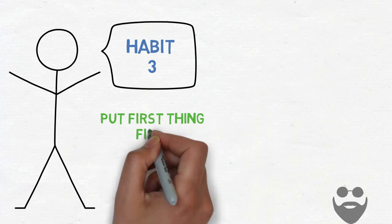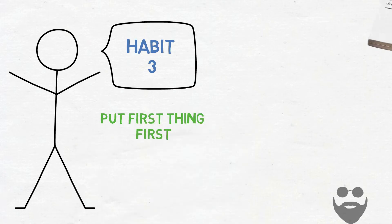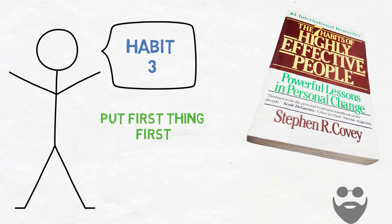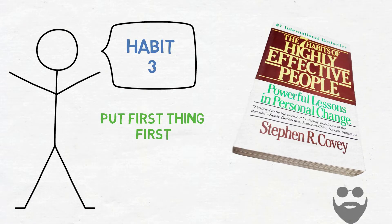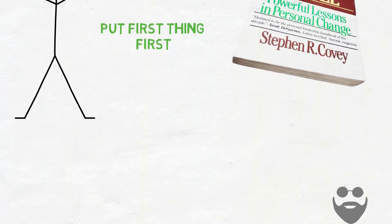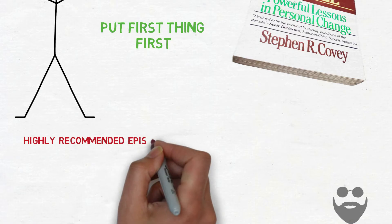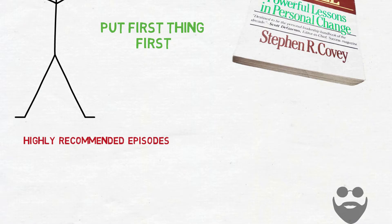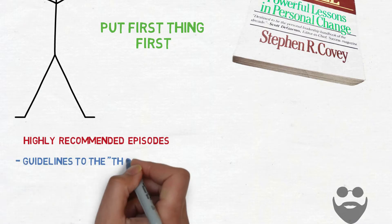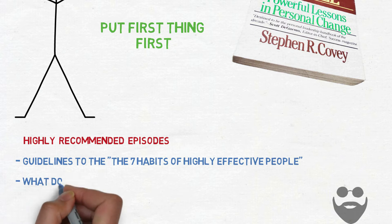This episode is part of the seven habits series based on what I've learned from Stephen Covey's bestselling book, The Seven Habits of Highly Effective People. I highly recommend for you to watch the following three episodes of our seven habits series in order to fully understand and practice the habits of highly effective people. They are guidelines to the seven habits of highly effective people. What does habit mean and how to form habits.